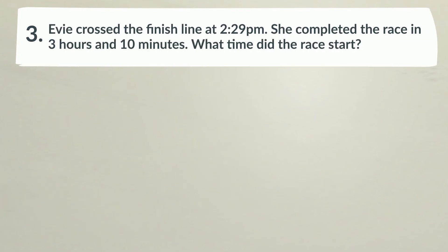Number 3. Evie crossed the finish line at 2:29pm. She completed the race in 3 hours and 10 minutes. What time did the race start?